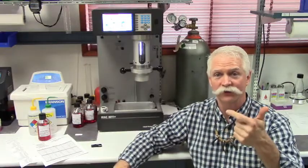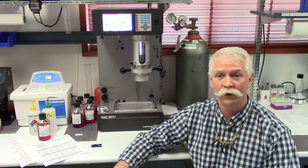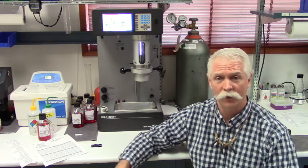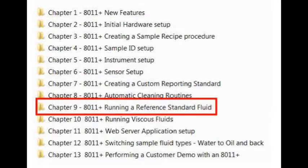So once the instrument's set up, the sensor's set up, and you've created a recipe, now you're ready to run a sample for the customer. So you're going to simply run it just like you did at home to make sure that the instrument is counting properly and performing properly. This is all covered in Chapter 9 of the video series.